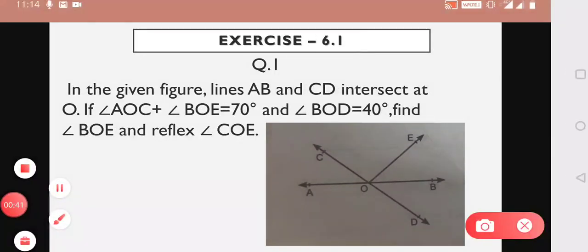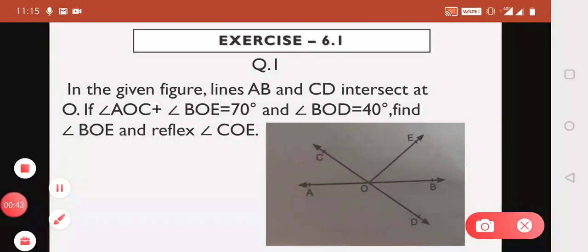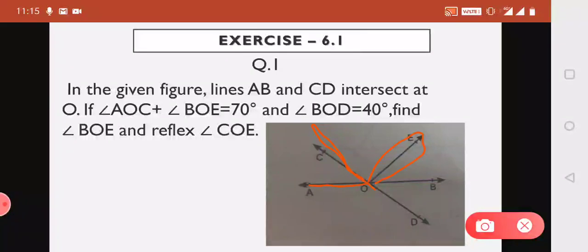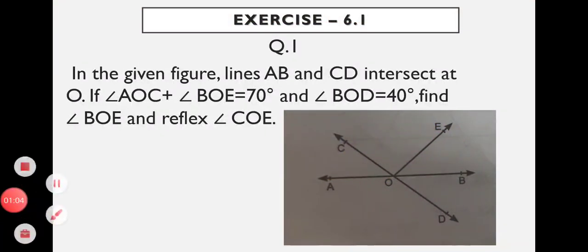Looking at the figure, we can see that Ray OC and Ray OE stand on line AB. So this forms a linear pair. That is, we will get these three angles — 1, 2, and 3 — as a linear pair.